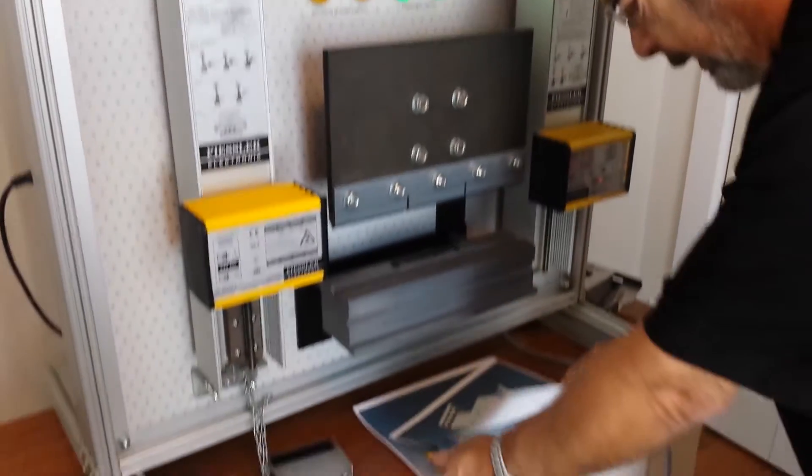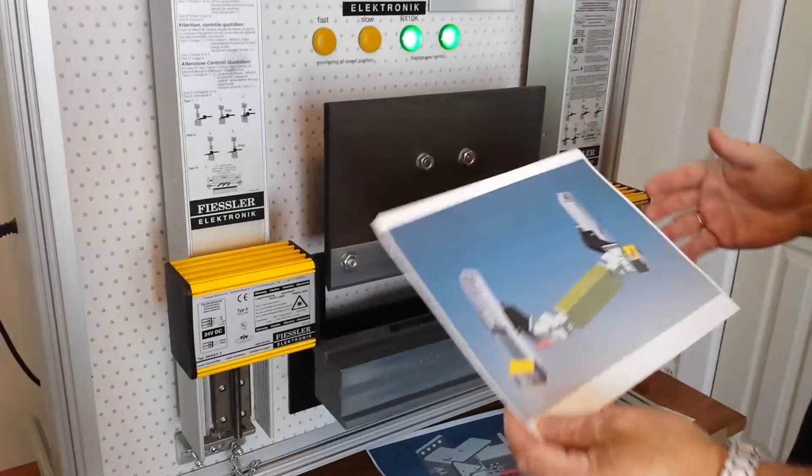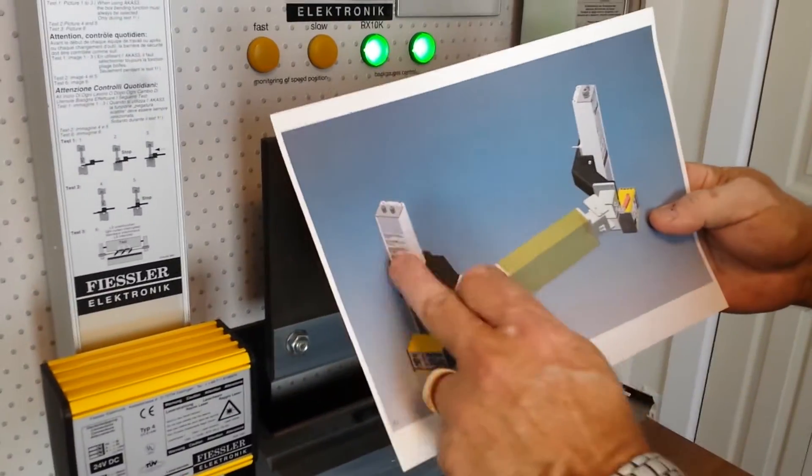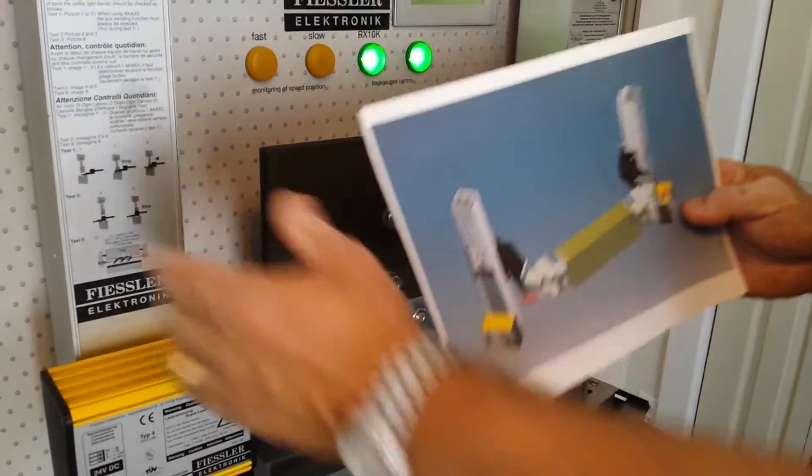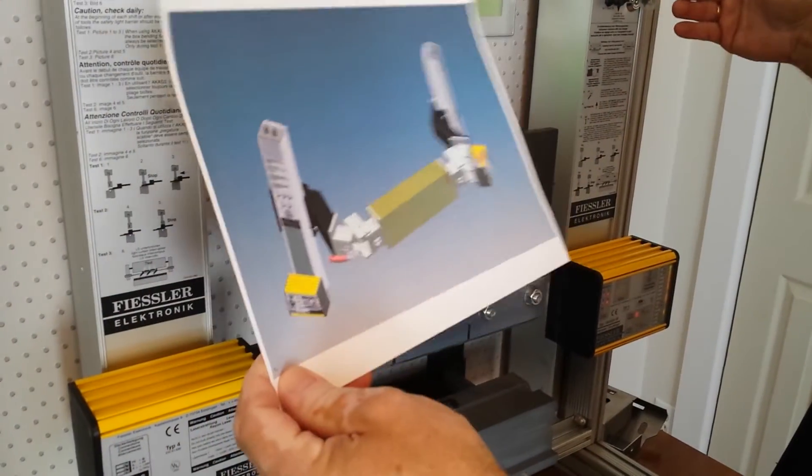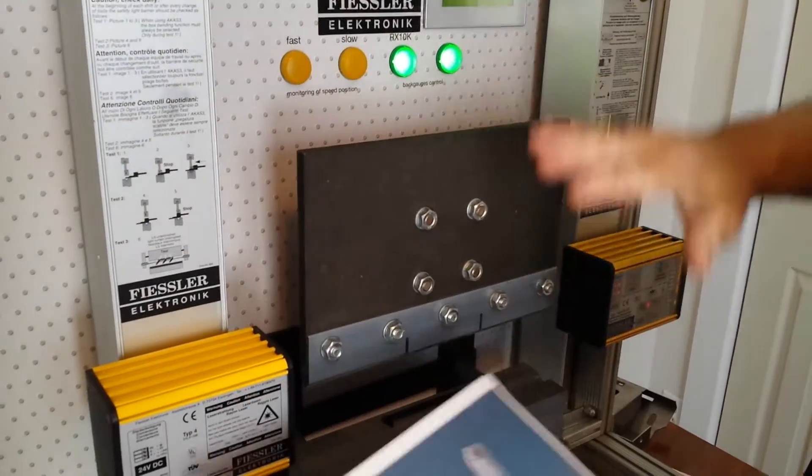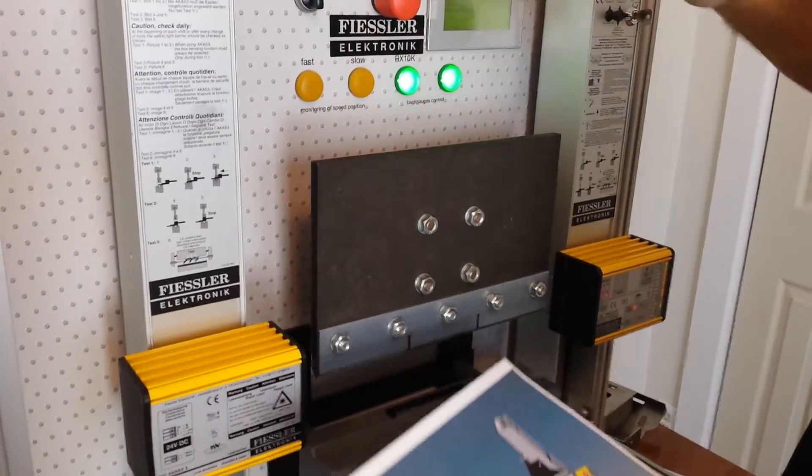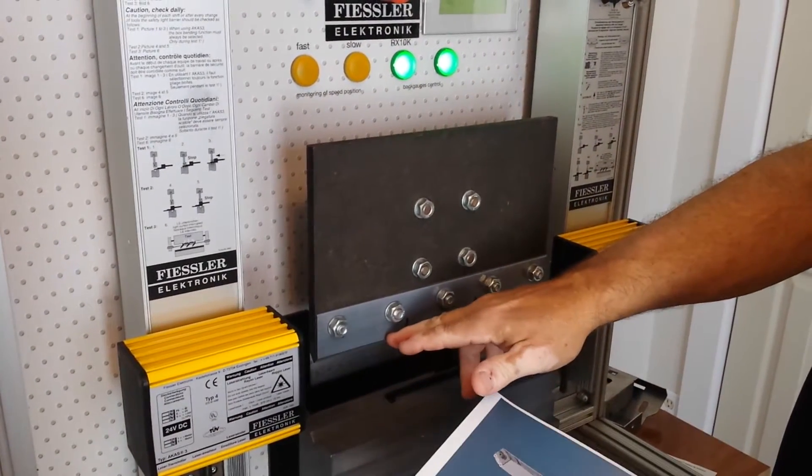Let me explain a little better because this is a demo unit. There are brackets that hold the receiver and the sender and are mounted to the sides of the press brake, and actually this system will go up and down with the press brake always covering the tip of the punch.